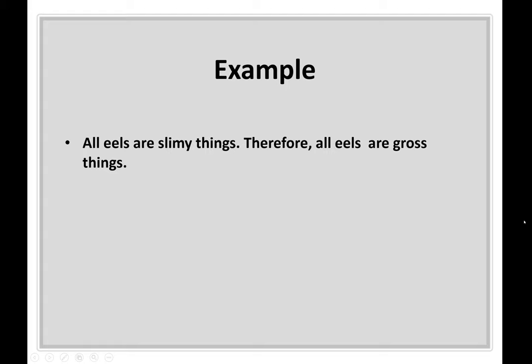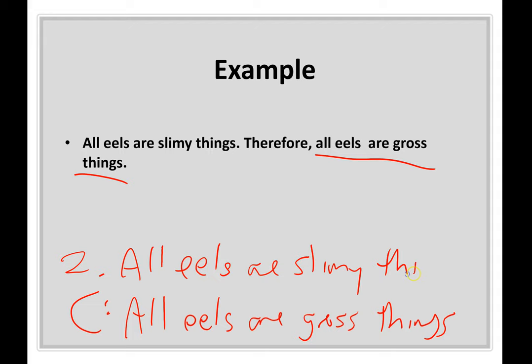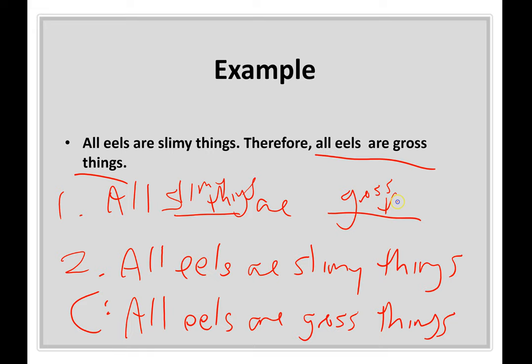Next: 'All eels are slimy things; therefore all eels are gross things.' Conclusion: all eels are gross things. Minor term: eels — mentioned in the given premise, making it the minor premise. Missing major premise must contain 'slimy things' and 'gross things' and be positive. Answer: all slimy things are gross things.